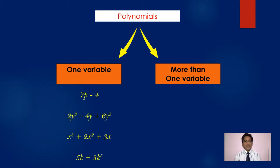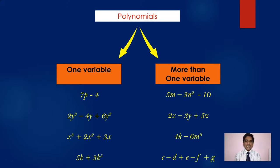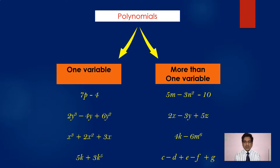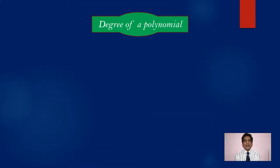In polynomials, we have polynomials with one variable and polynomials with more than one variable. For example: 7p minus 4 has variable p; 2y³ minus 4y plus 6y² has variable y; x³ plus 2x² plus 3x has variable x; 5k plus 3k⁵ has variable k. On the other hand, 5m minus 3n² minus 10 has two variables m and n, and 2x minus 3y plus 5z has three variables. In this chapter we will discuss only polynomials with one variable.